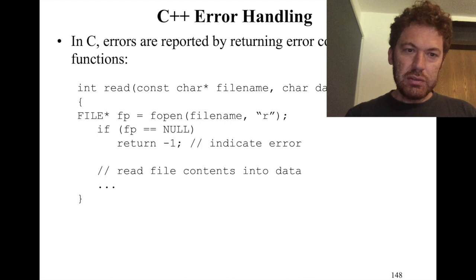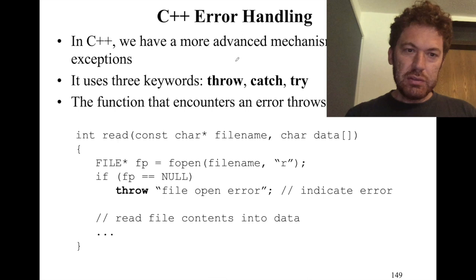We close the C++ crash course with error handling. In C it is quite primitive — you return error codes like numbers and branch on them. In C++ we have a more principled way: we try a block that potentially leads to errors or exceptions, we throw exceptions, and we catch them. The good news is you can throw not only integer error codes but any object — for example, a string object.